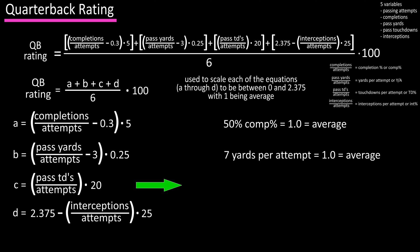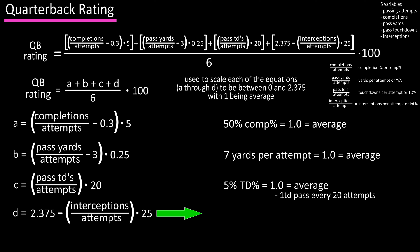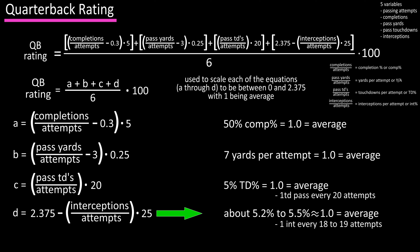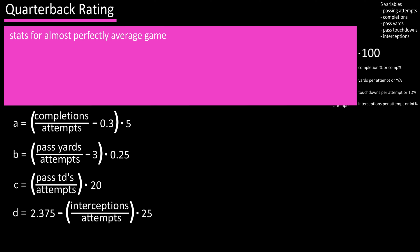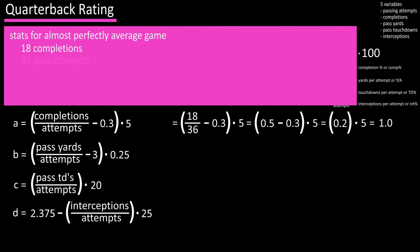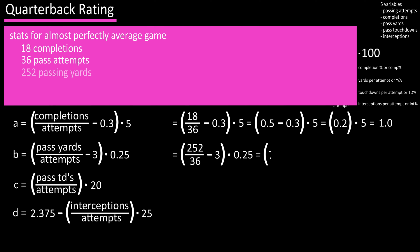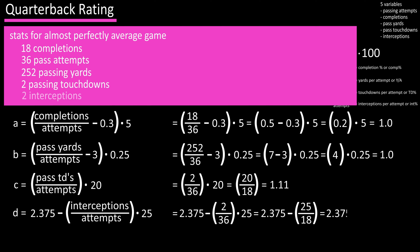For equation C, based on touchdowns per attempt, 5% results in a 1, meaning one touchdown thrown every 20 pass attempts is considered average. For equation D, based on interception percentage, about 5.2 to 5.5% interception percentage results in a 1, so one interception every 18 to 19 pass attempts is considered average. An almost perfectly average game would be 18 completions, 36 pass attempts, 252 yards, two passing touchdowns, and two interceptions.